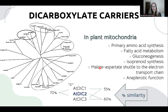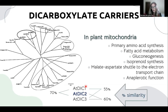The DICs participate in other pathways such as amino acid and nucleotide synthesis, and gluconeogenesis. The DIC isoforms share some similarity, and DIC2 is the most related among the three isoforms identified in the Arabidopsis thaliana genome.